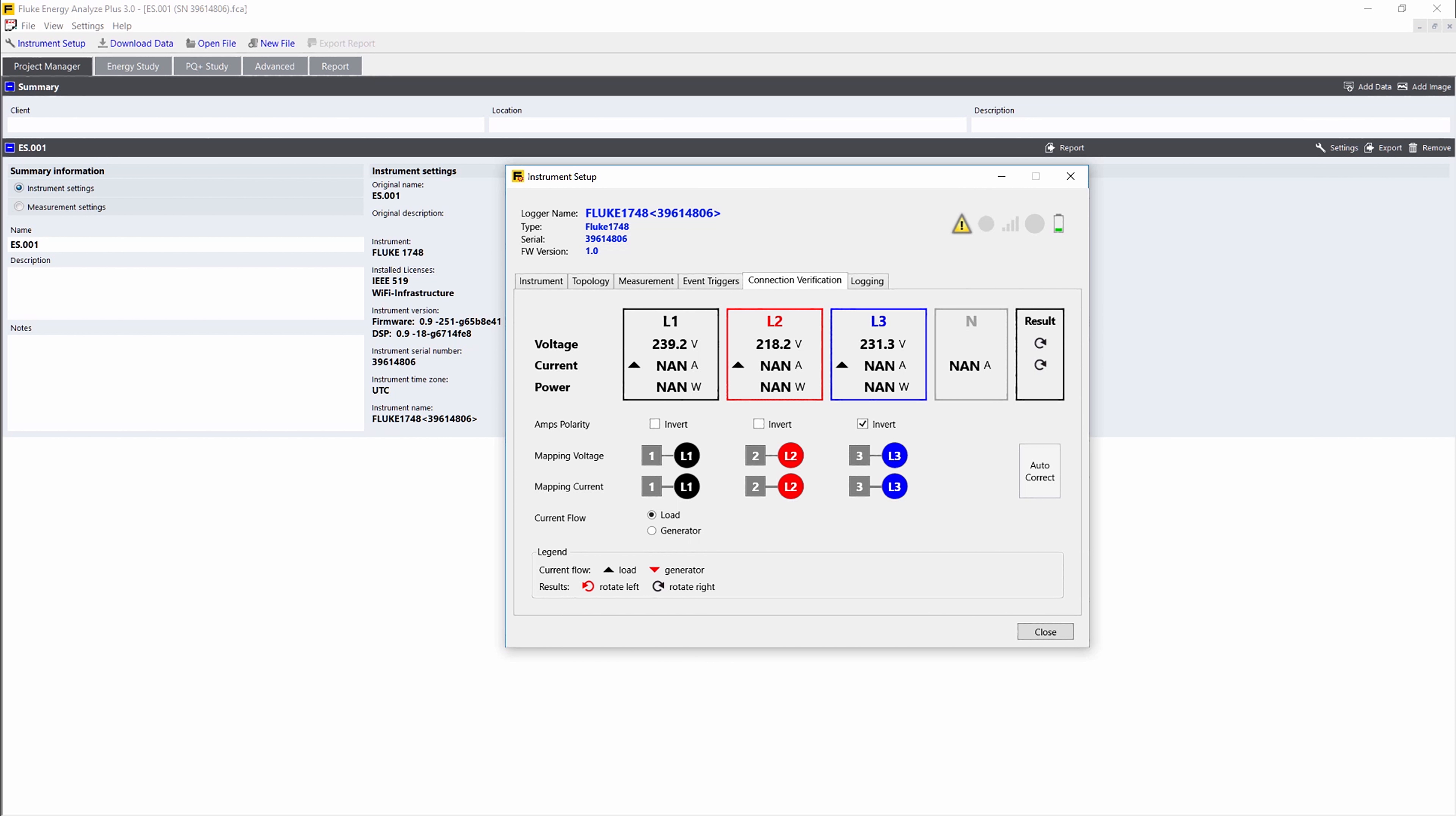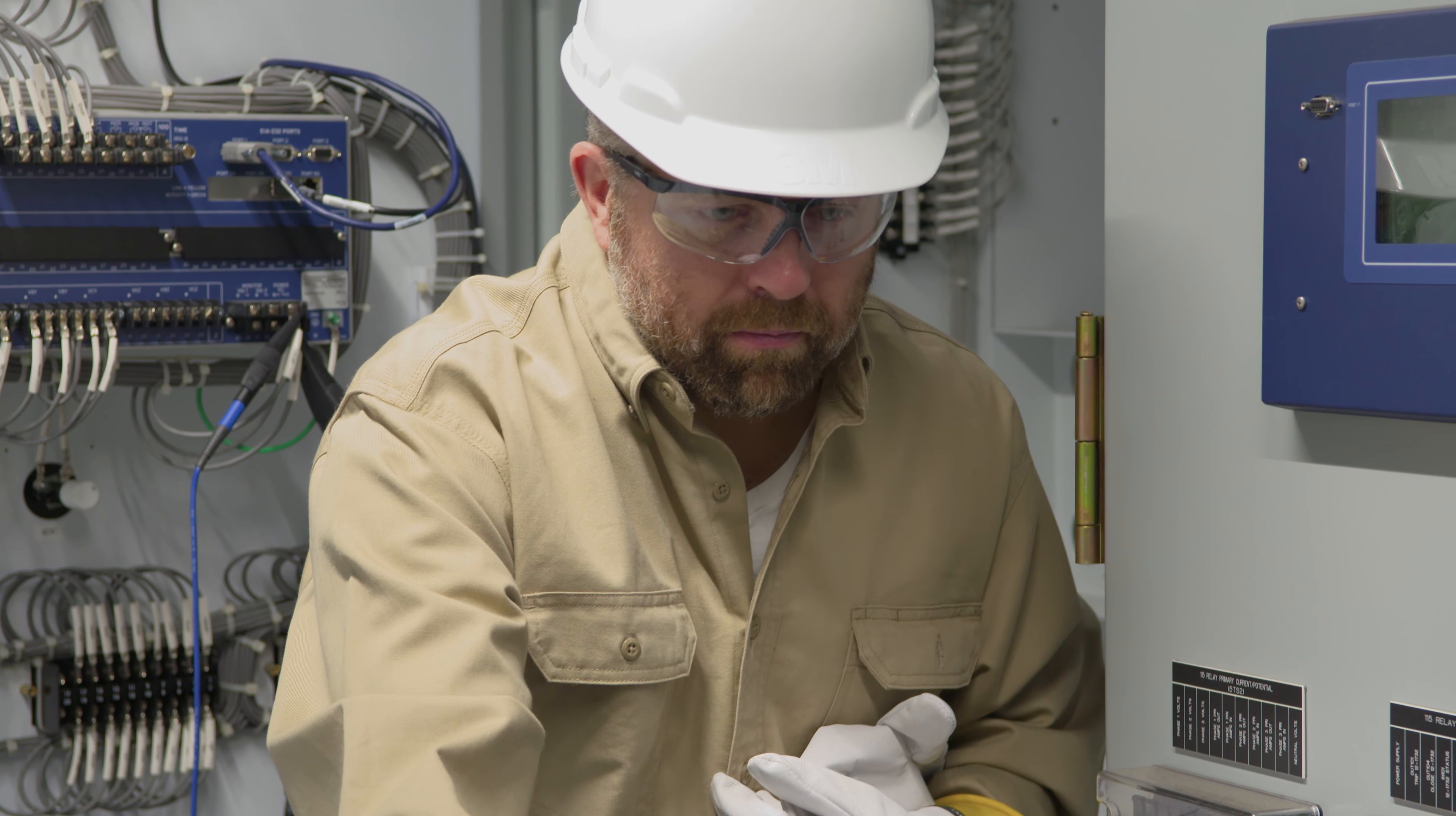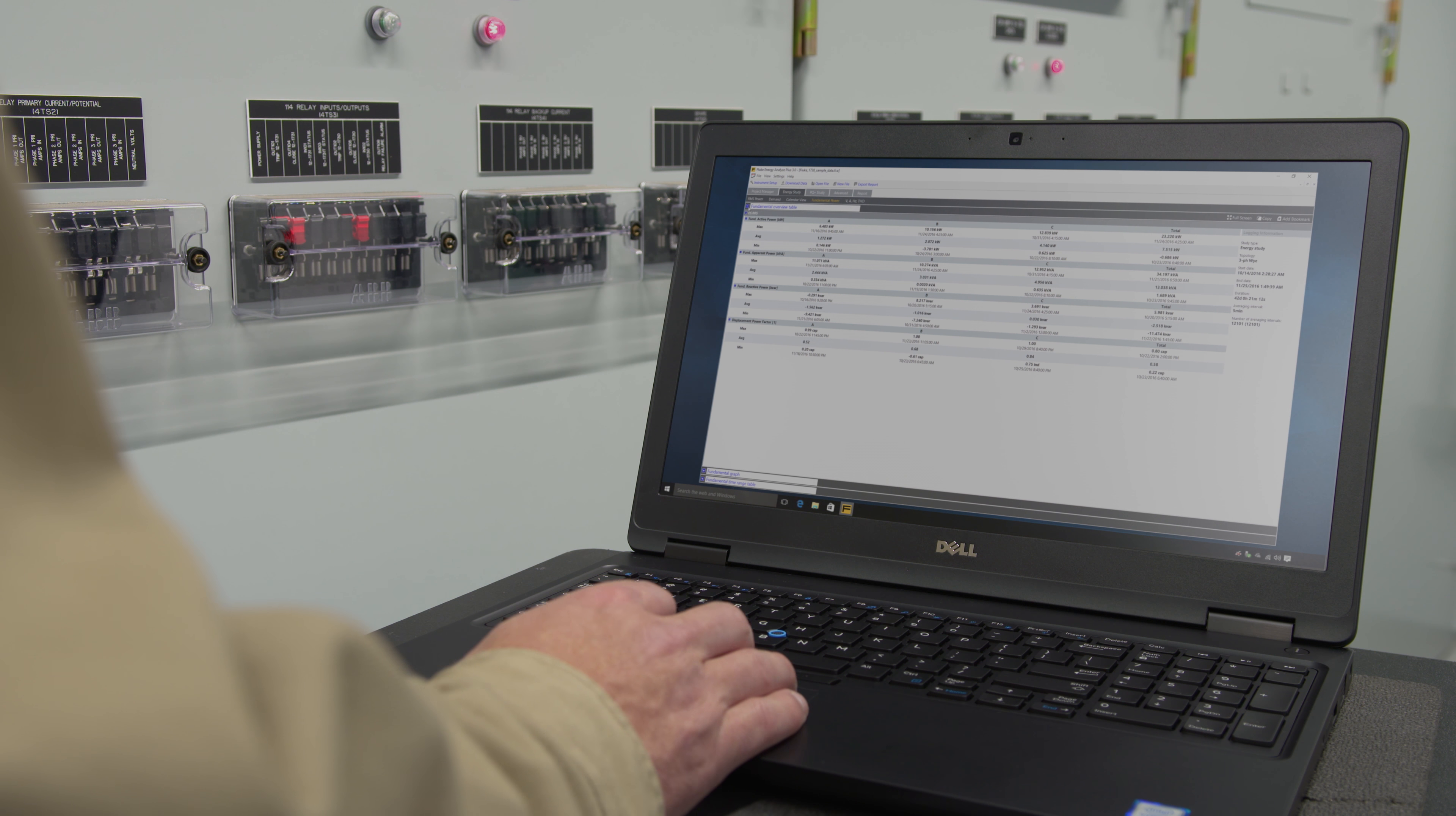Once the connections are corrected, the power button on the unit will turn from amber to green. You can even minimize your time in potentially hazardous environments and reduce the hassle of suiting up in PPE by using a Wi-Fi connection to connect to Energy Analyze Plus to view data directly in the field.